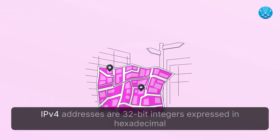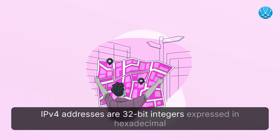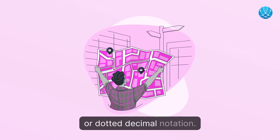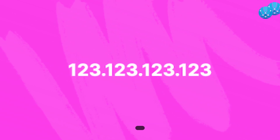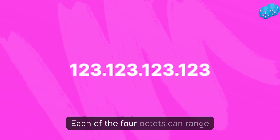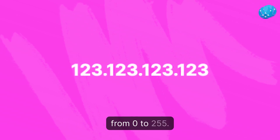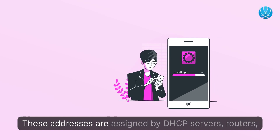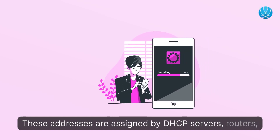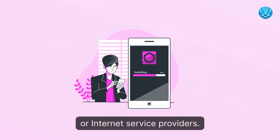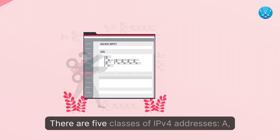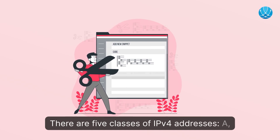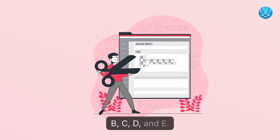IPv4 addresses are 32-bit integers expressed in hexadecimal or dotted decimal notation — for example, 123.123.123.123. Each of the four octets can range from 0 to 255. These addresses are assigned by DHCP servers, routers, or internet service providers.